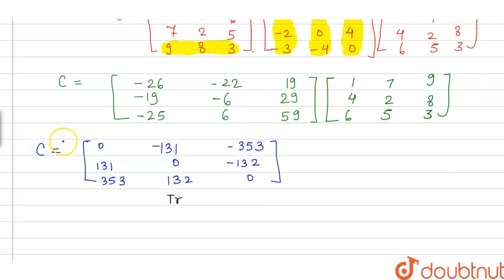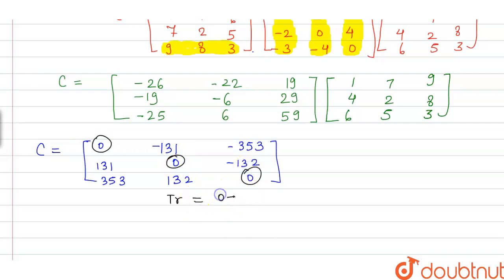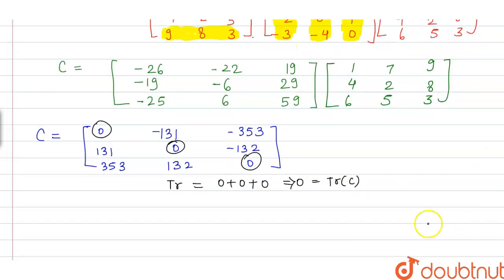Now let's focus on the trace of matrix C. The trace of a matrix is the sum of its diagonal elements. This matrix has diagonal entries 0, 0, and 0, so the trace of matrix C equals 0.